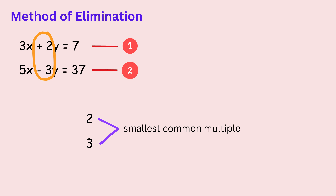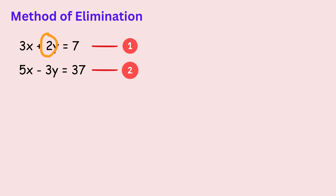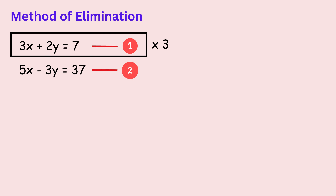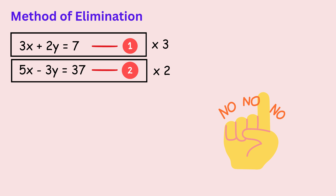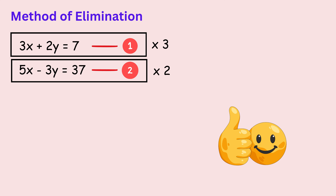The smallest common multiple of 2 and 3 is 6. To get 6 here, we multiply the first equation by 3, so that the term with 2 times y becomes 6 times y. Then we multiply the second equation by 2, so that minus 3 times y becomes minus 6 times y. This step does not change the meaning of the equations — it only rewrites them in a more useful form.